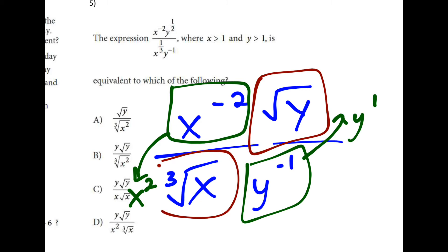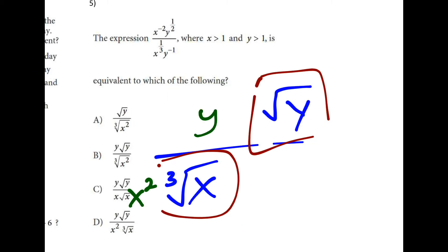If I clean things up and rewrite it a little bit, I'm left with y times the square root of y over x squared times the cube root of x, which is just d. So all we did was rewrite the fractions as roots and put the negatives to the opposite part of the fraction. If it was on top, it went to the bottom. If it was on bottom, it went to the top.